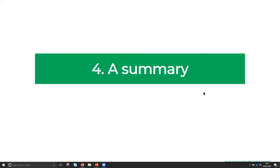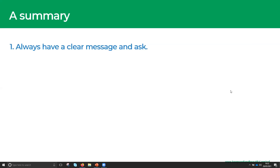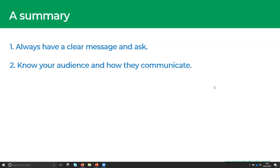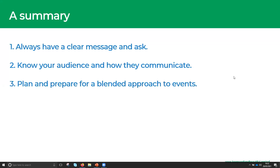Coming to the end of our scheduled content — we'll be going to Q&A now. A summary and some take-home messages. Number one: whenever you're communicating and whatever the challenges, always have a clear message and ask. You'll need to know your audience and how they communicate to reach them — do ask your audience whenever you need to speak with them. Plan and prepare for a blended approach to events — that will save you a lot of time later on, and having an online backup will help if COVID restrictions mean you have to cancel your event.